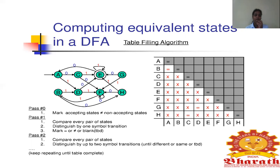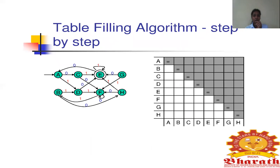The first step in the table filling algorithm involves a diagram like this. I am going to take states A through H. I list all the states in the horizontal way from top to down — A, B, C, D, E, F, G, and H. It should not be written from bottom to top; only the top-down approach is used.